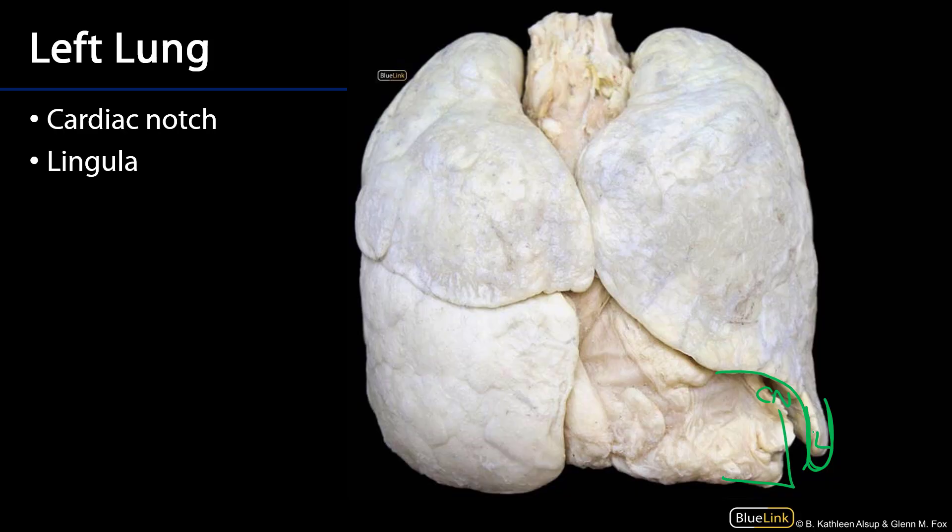We've discussed the various surfaces, fissures, lobes, and gross structures of the right and left lungs. Thank you very much for your time.